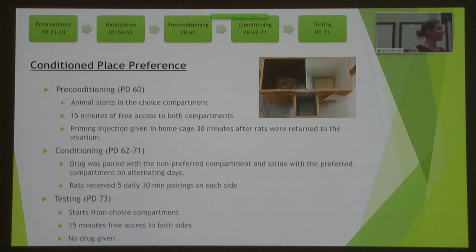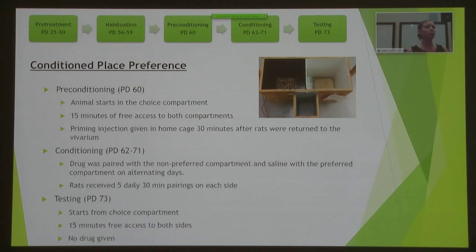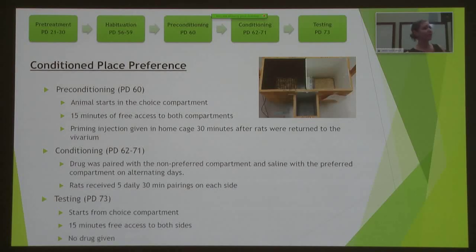First, we conducted preconditioning to find out if the animals had a bias toward a specific side. We gave them 15 minutes of free access to both sides to determine if they already preferred one side of the chamber. We also introduced the cannabinoid agonist before placing them in the experimental chamber, as the drug can sometimes be aversive — we gave the injection 30 minutes after preconditioning and returned them to home cages. We then waited 24 hours for the drug to leave their system before starting conditioning.